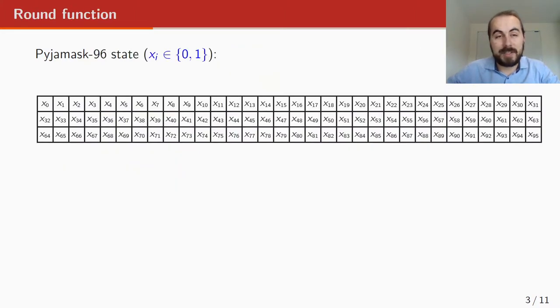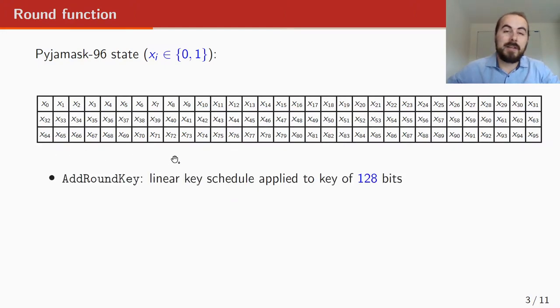The block cipher PYJAMASK-96 works on bit states of three rows of length 32. And the round function is designed as first we add the round key. The key of PYJAMASK-96 has 128 bits. The key schedule is linear and after each step in the key schedule, you get a round key of 128 bits, you discard the last 32 and you add what remains to the PYJAMASK state.